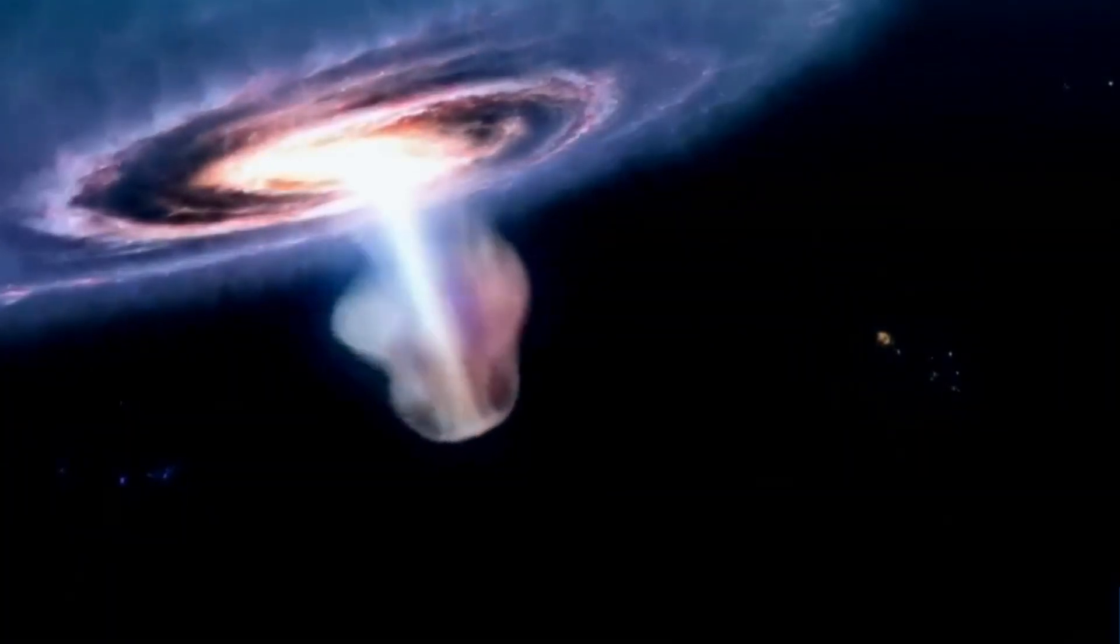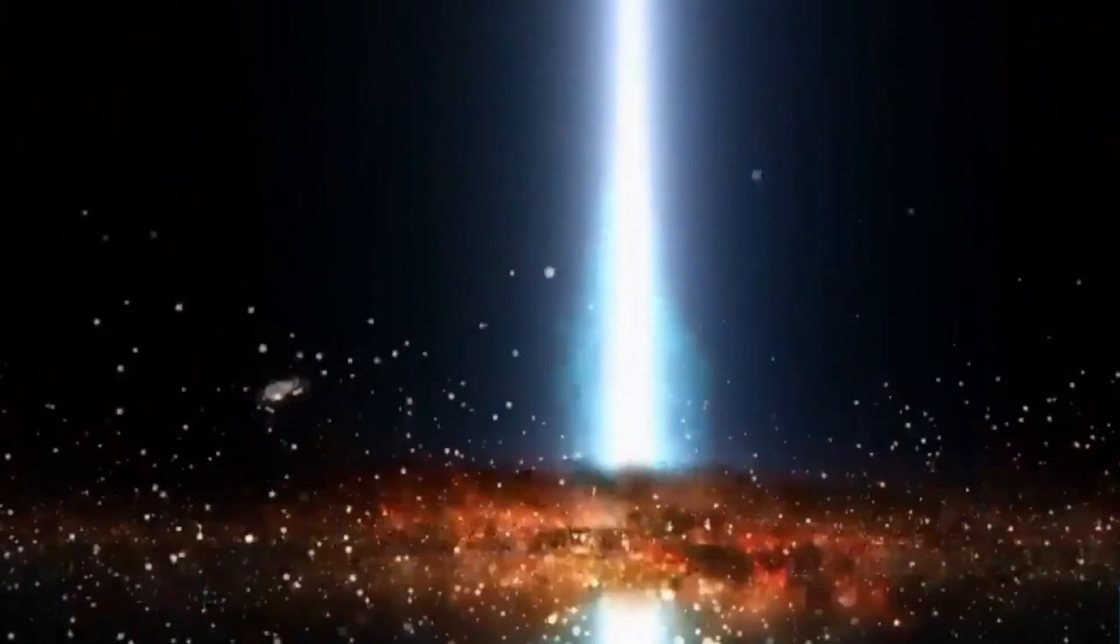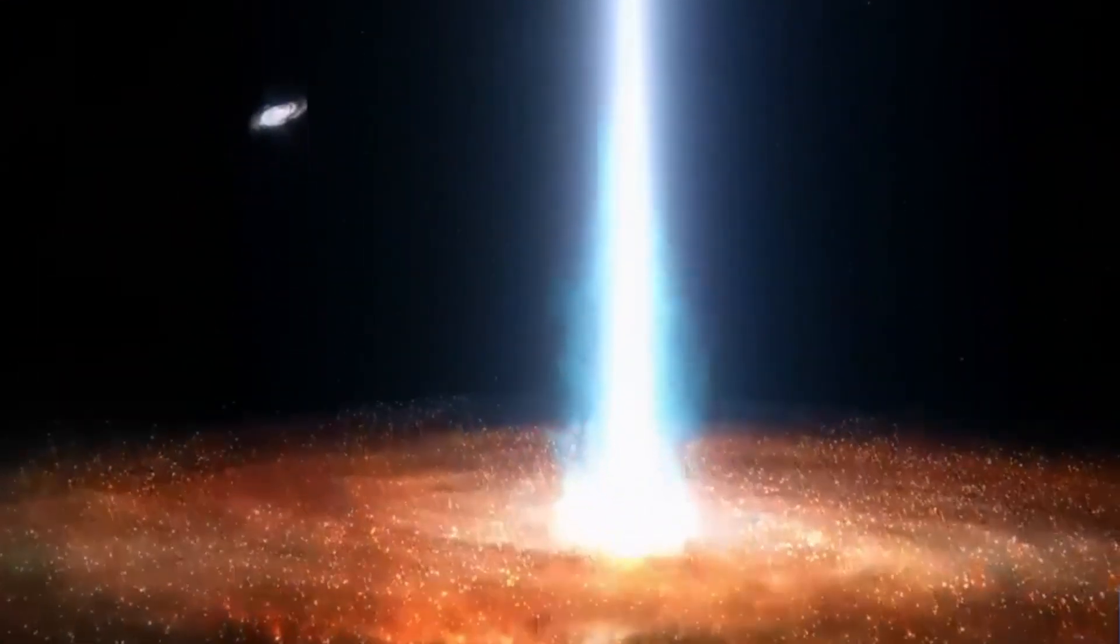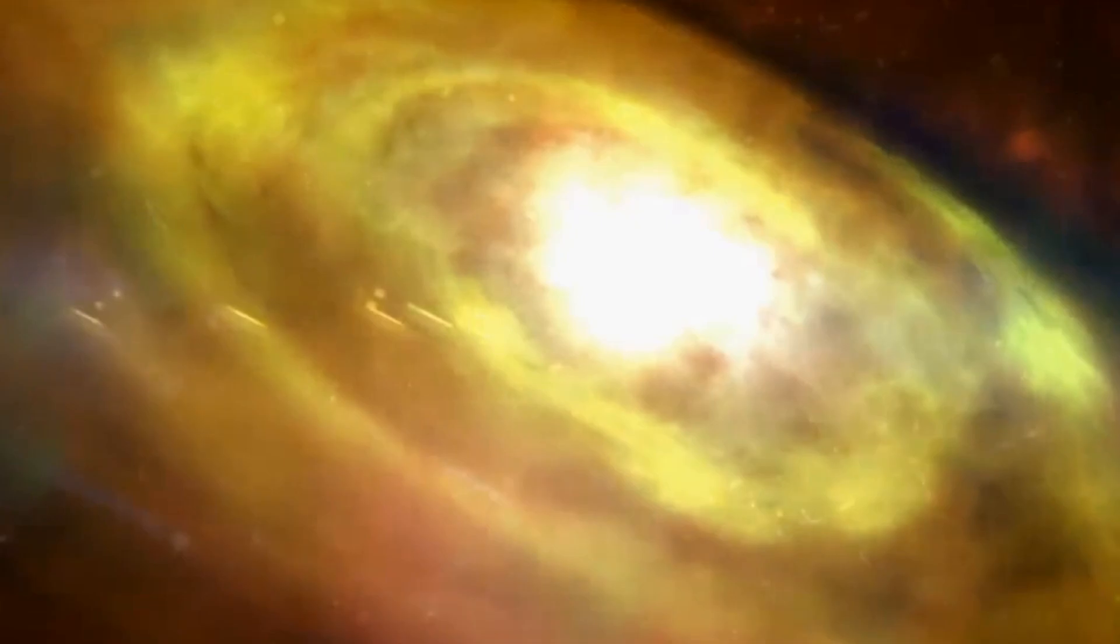Furthermore, any material that the black hole doesn't consume can be directed towards its poles and expelled as high-speed jets accompanied by the emission of light. These emissions of light, including x-rays and visible light from the jets, enable astronomers to detect the presence of black holes.